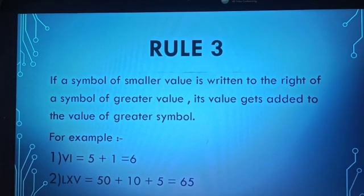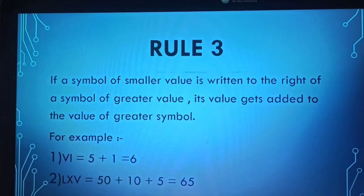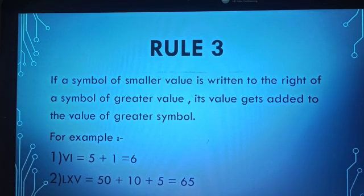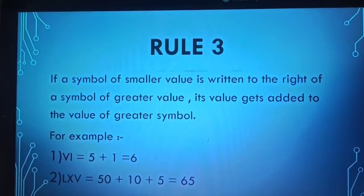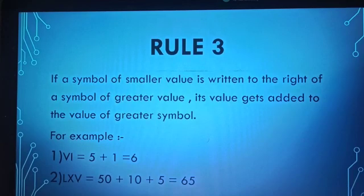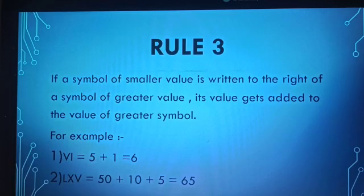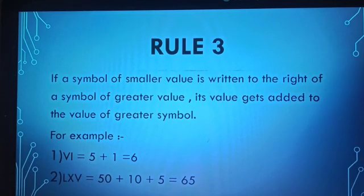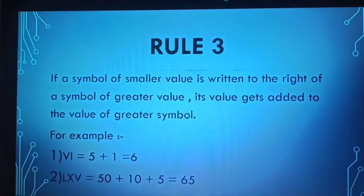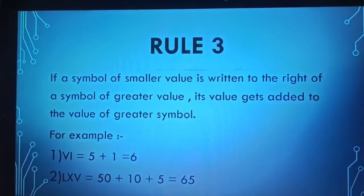Rule 3: if a symbol of smaller value is written to the right of a symbol of greater value, its value gets added to the value of the greater symbol. For example, 1 is represented by I and 5 is represented by V, so VI equals 5 plus 1, which is 6. In the second example, V is 5, X is 10, and L is 50, so LXV equals 50 plus 10 plus 5, which is 65.